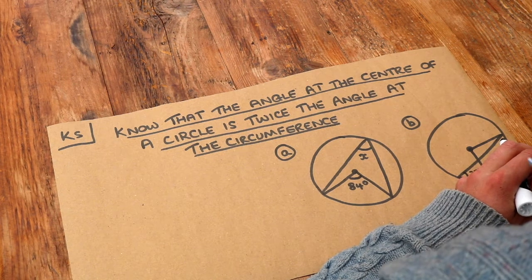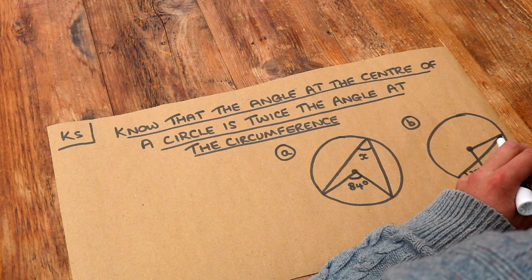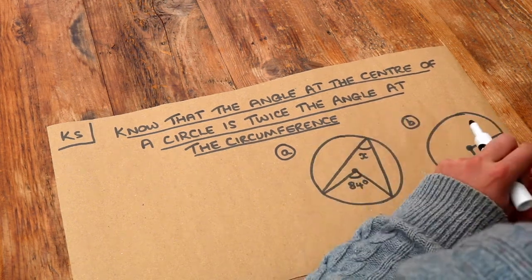This is an example of a circle theorem. Circle theorems are just angle laws to do with angles in circles or outside circles.